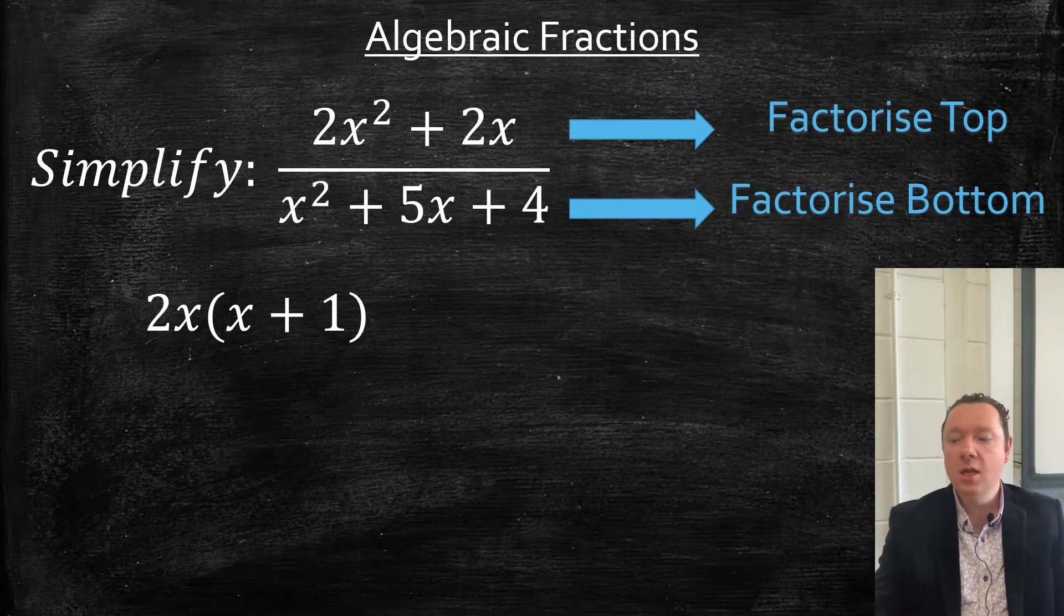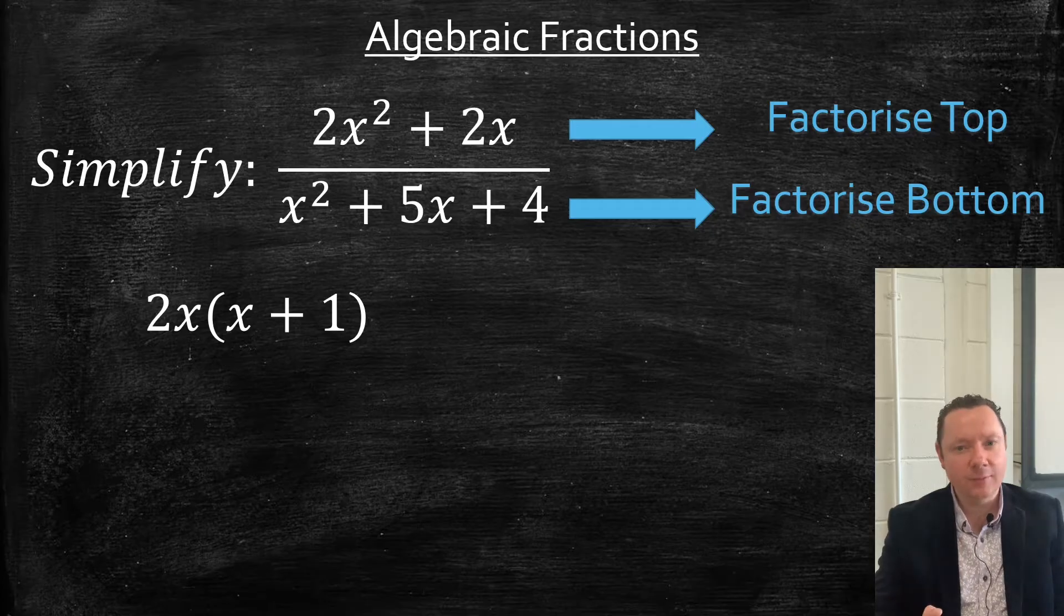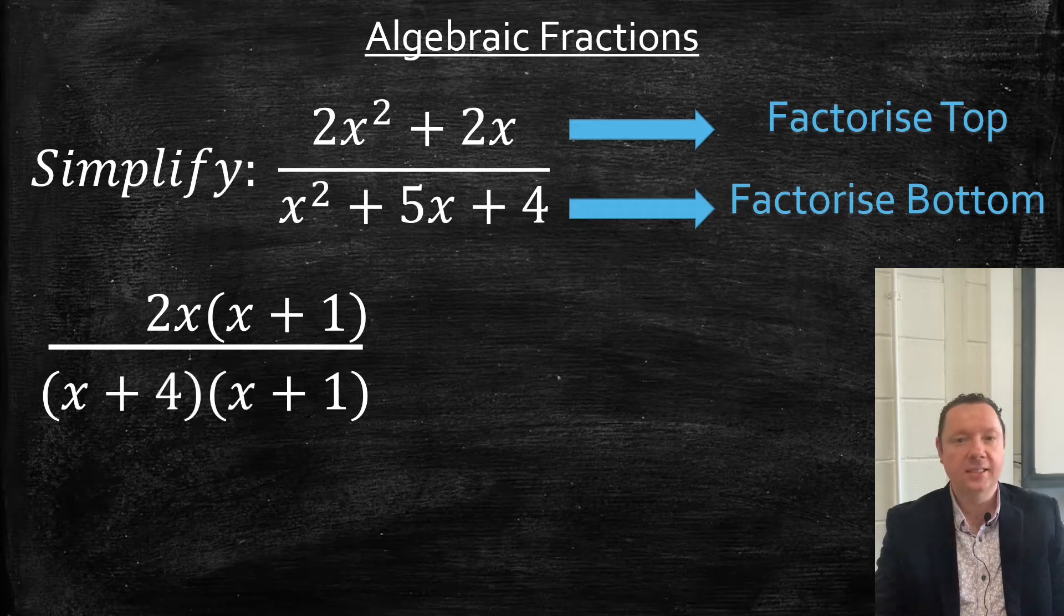Well, that's a trinomial, so it's double brackets. Two numbers that times to make 4 but add to make 5. Well, that's just 4 and 1. So it's (x + 4)(x + 1).